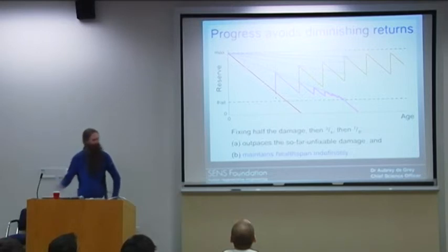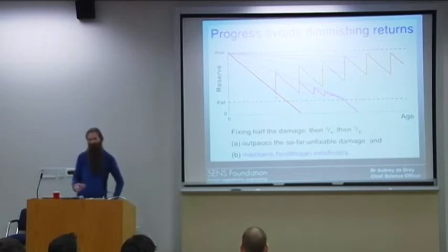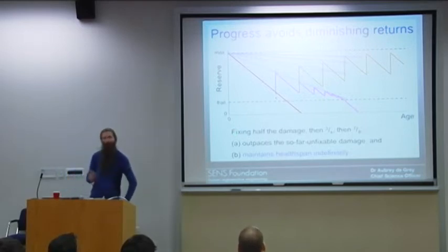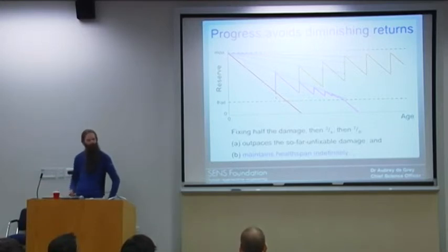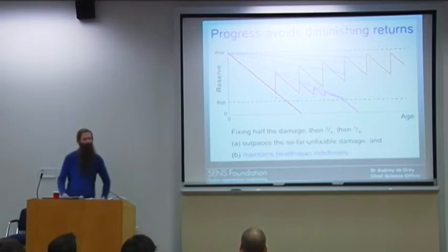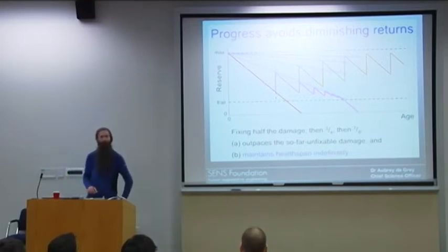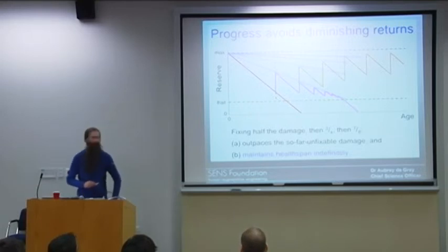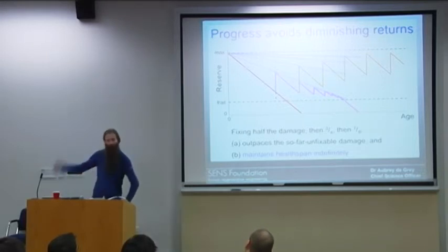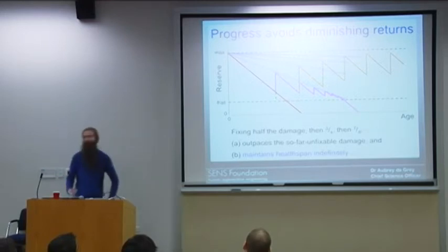So please don't try to take anything quantitative away from this. I'm just trying to get a point across here. On the X axis, I've got age. On the Y axis, I've got damage - I'm using the word reserve, the reciprocal of damage, the amount of additional damage that you can afford to accumulate before things start going wrong. So obviously, at age zero, you start off with not very much damage and a lot of reserve. And you gradually accumulate more and more damage and lose reserve. And eventually, you get down to this point, what I'm calling the frailty threshold, where pathology starts to occur. If we look at what I've said in the talk so far, we're looking at what's depicted by the pink line. You take someone who's already in middle age. You have some therapies that are reasonably effective, but not completely effective, against all of these various types of damage. It basically repairs, let's say, half the damage, the easy damage.